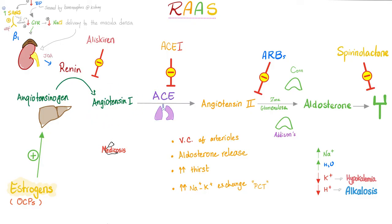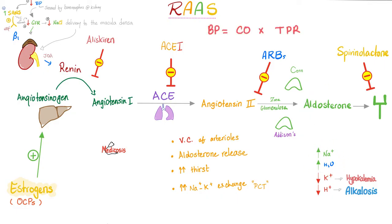Here is angiotensin 1. Angiotensin converting enzyme (ACE), mostly in the lung, will convert angiotensin 1 into angiotensin 2, which has two main functions. Function one — it's in the name: it constricts vessels and raises blood pressure. Function two — it knocks on the door of the zona glomerulosa of the cortex of your adrenal gland and tells that cortex to secrete aldosterone. What does aldosterone do? Four things: it reabsorbs salt, reabsorbs water, excretes potassium, and excretes hydrogen.